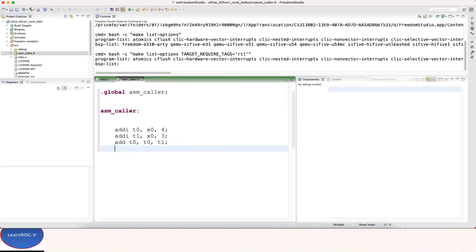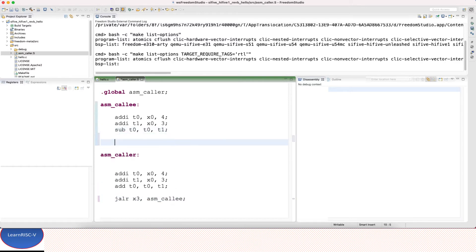I just want to add these two numbers and store in the t0 destination register. Then I want to jump into a callee function in assembly. I'll just call callee and I'll just copy the same. Just to differentiate, I will subtract. Now from caller I should jump into callee, so I want to jump and return back.